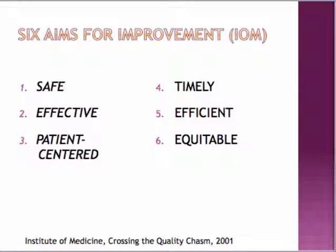The Institute of Medicine report 'Crossing the Quality Chasm' came out in 2001, and they added six aims for improvement. The first was being safe — avoiding injury to patients from the care that is intended to help them. The second was being effective — providing services based on scientific knowledge to all who could benefit, and refraining from providing services to those not likely to benefit, essentially avoiding underuse and overuse.